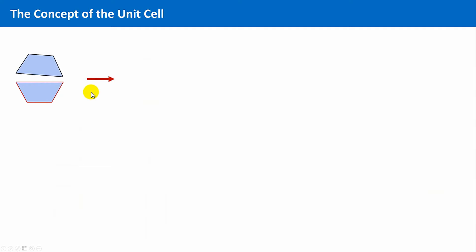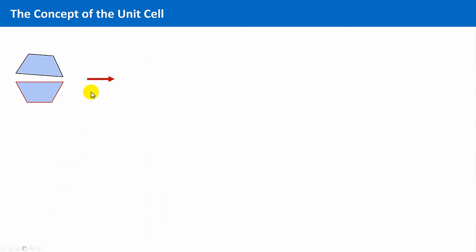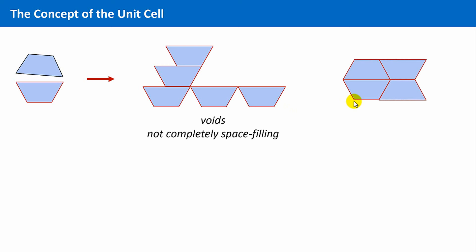Secondly, and this is even more important, if we want to build up our initial shape by assembling these building units, then it is not possible if we consider only one orientation. If we use the shape and translate this again and again and push them together, voids will be remaining. This means it is not possible to fill this space completely by this translation operation only.